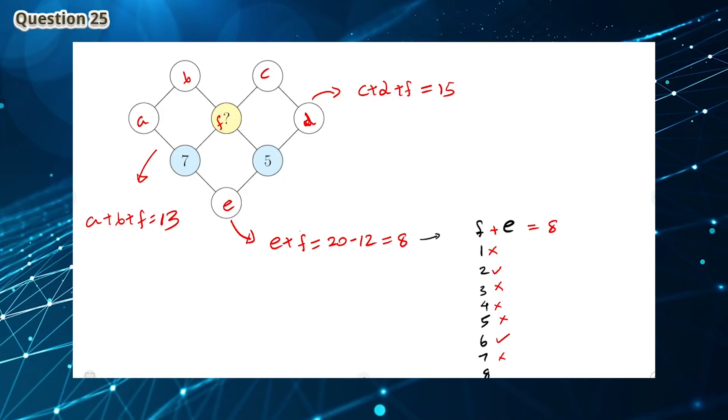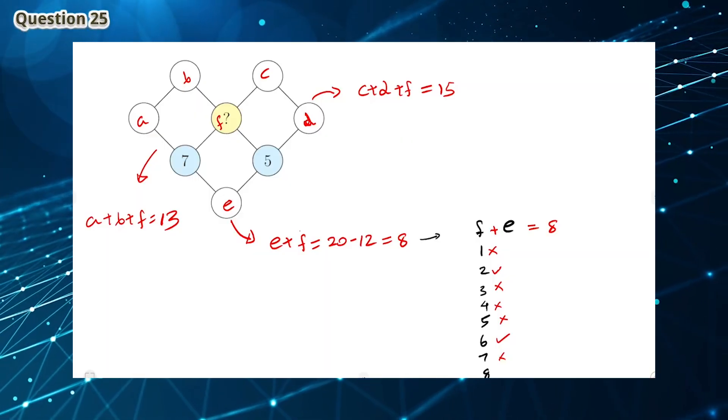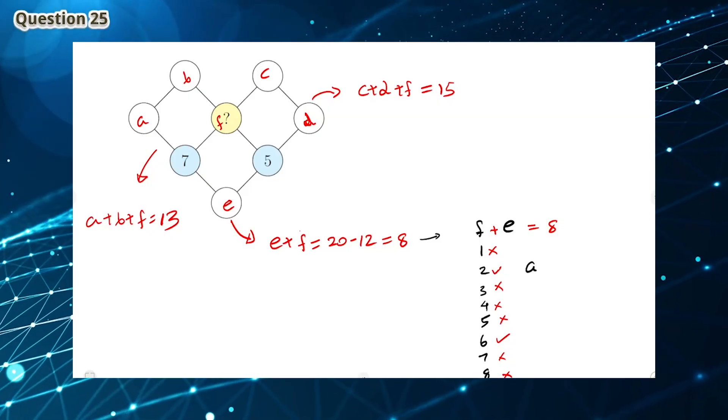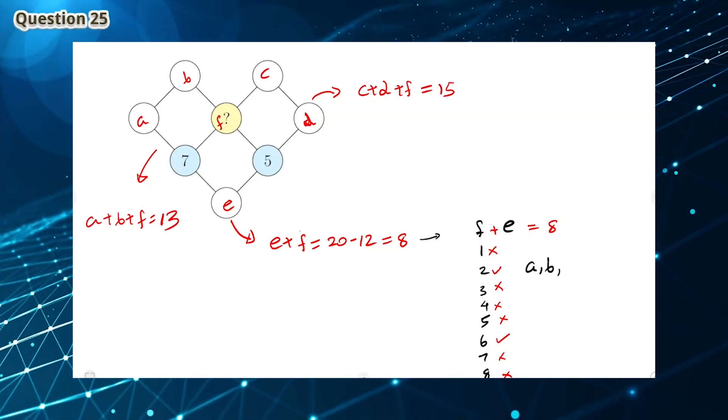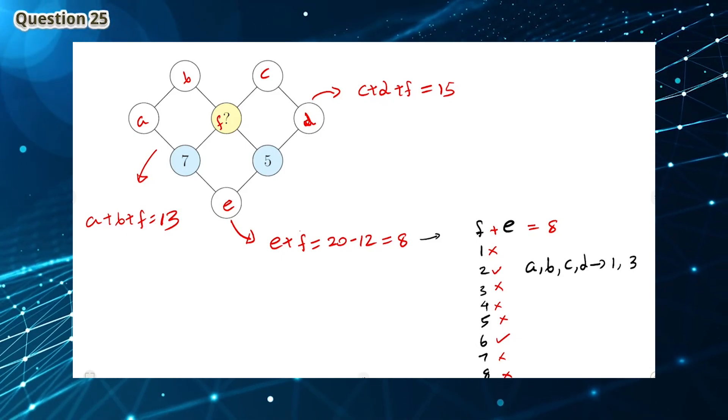F can't be 5 because there's already a 5 in the diagram. F could be 6. F can't be 7 since there's already a 7 in the diagram. And if F is 8 then E would be 0, but we can't get any 0 digits. This means A, B, C, and D can be selected from the numbers 1, 3, 4, and 8.